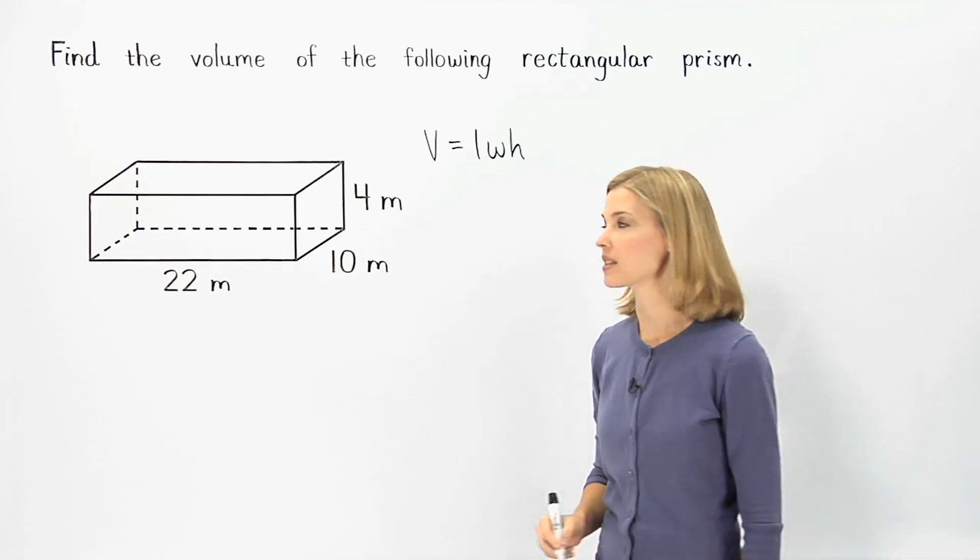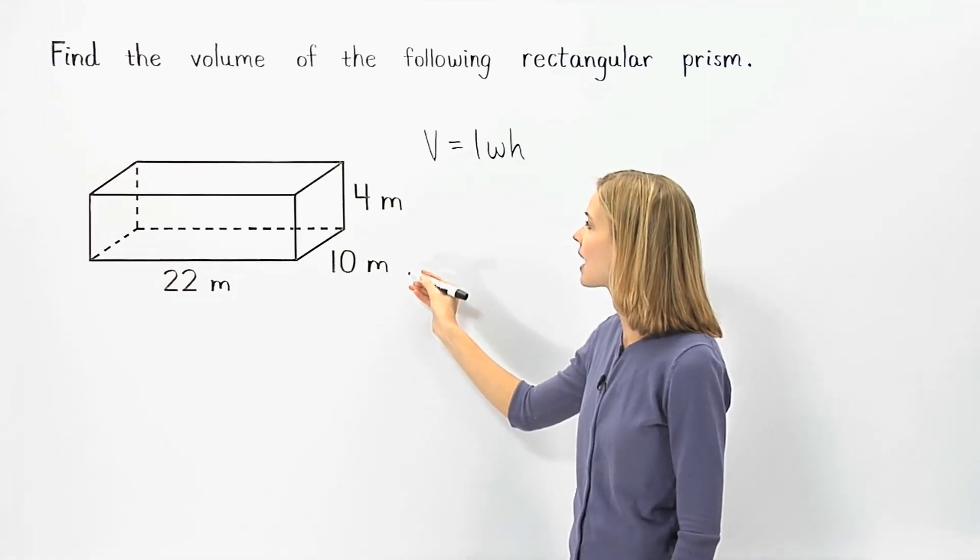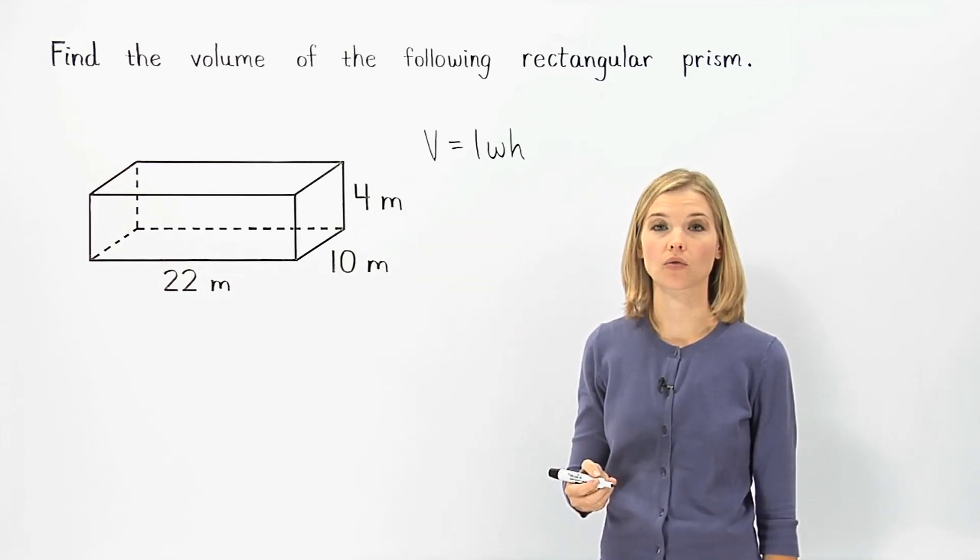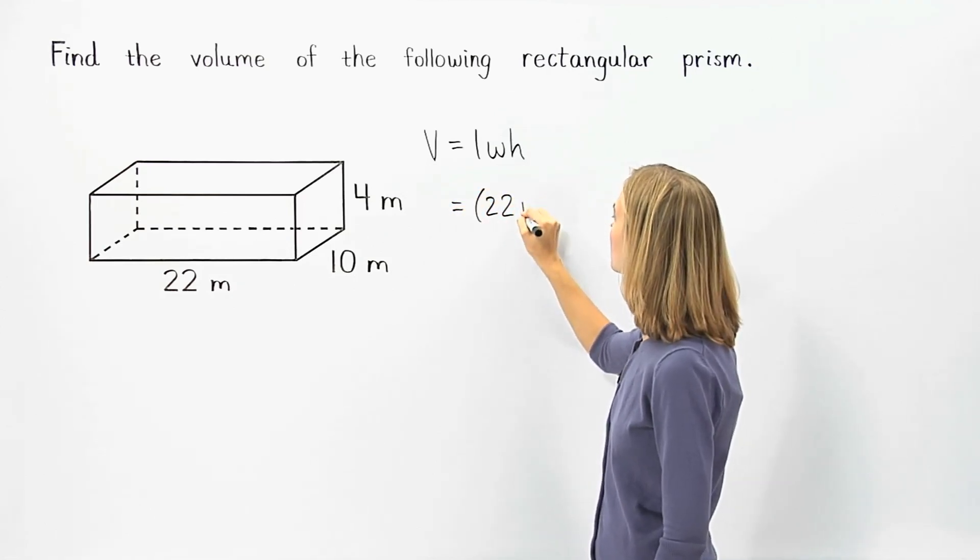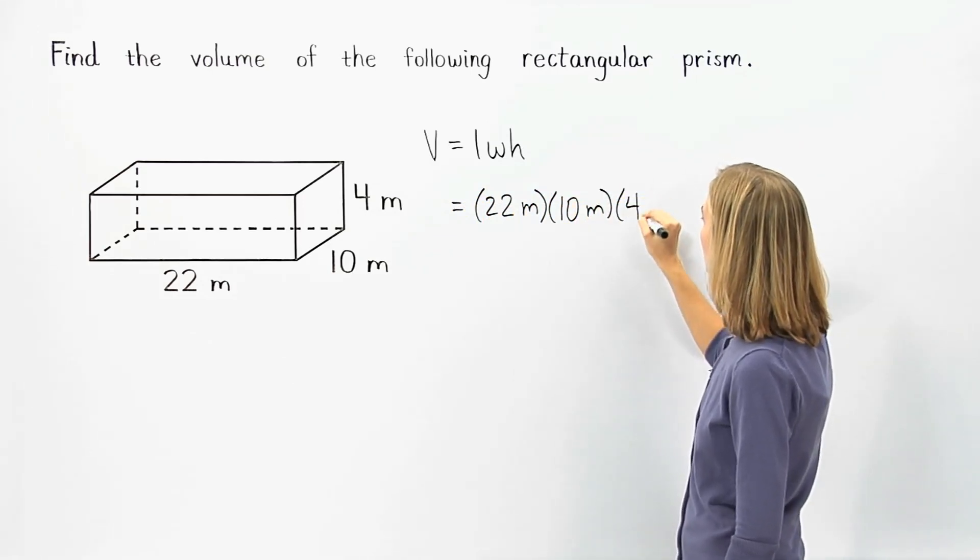Since the rectangular prism has a length of 22 meters, a width of 10 meters, and a height of 4 meters, we can plug this information into the formula to get 22 meters times 10 meters times 4 meters.